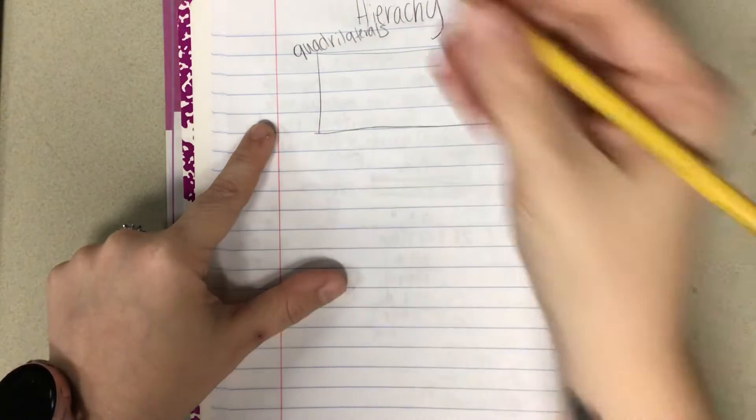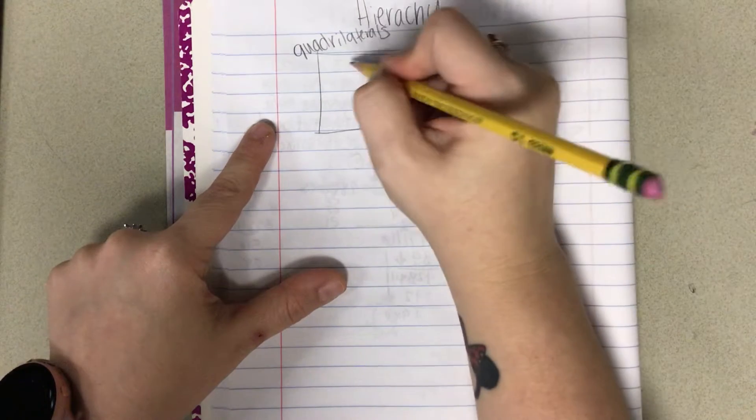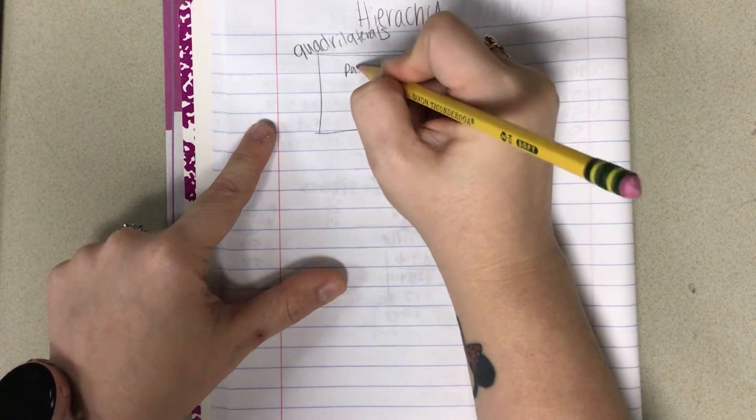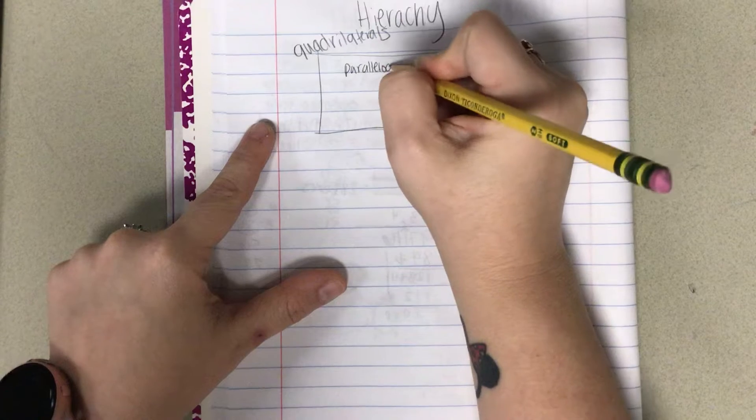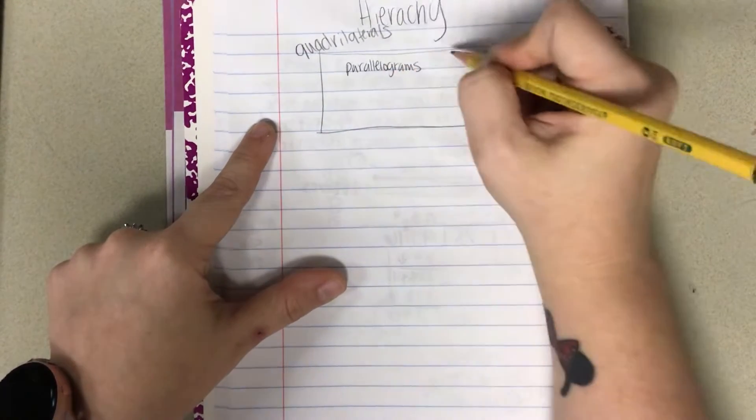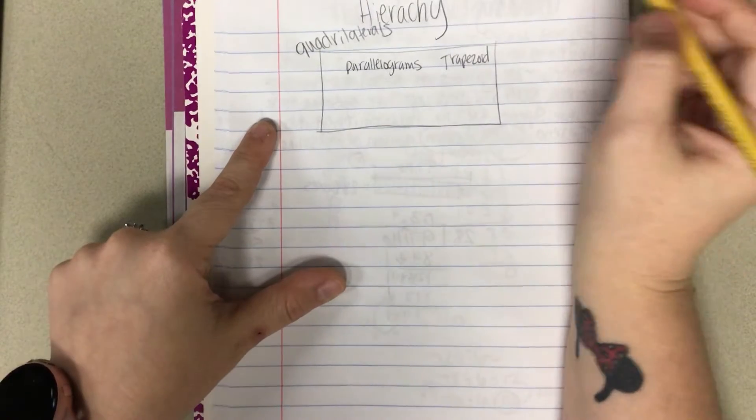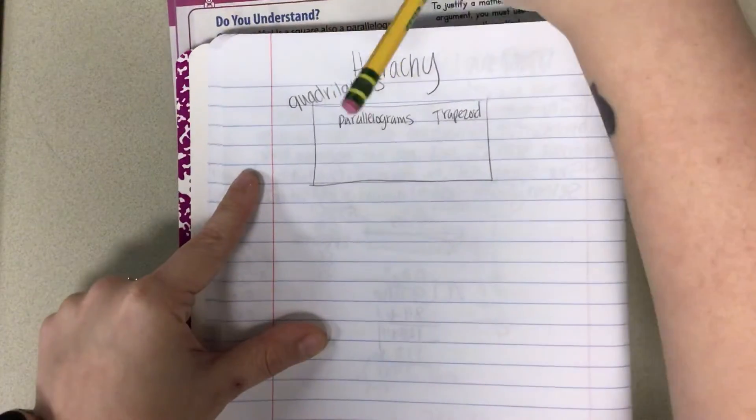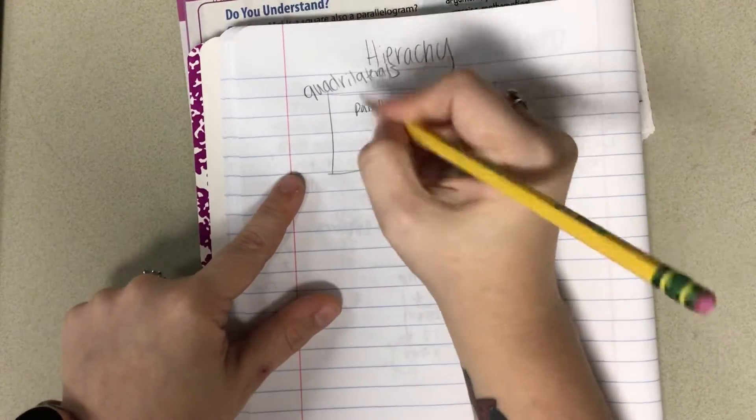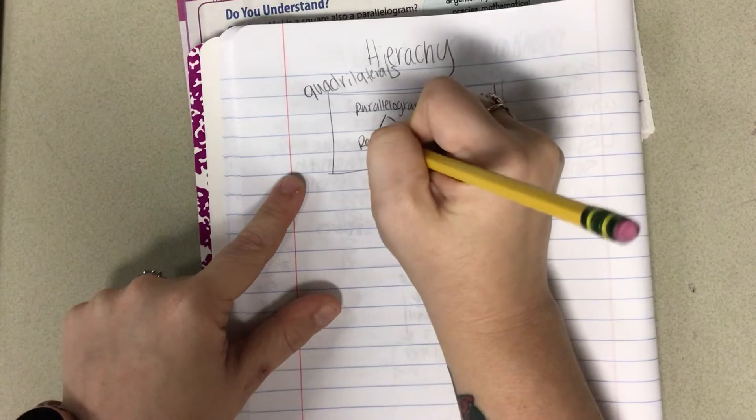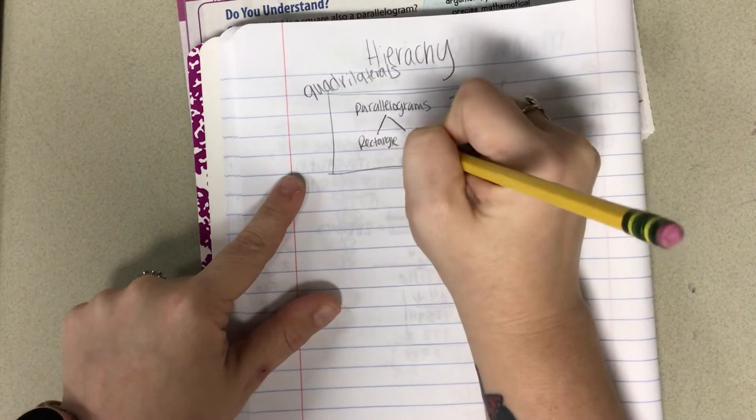So far we know that there's two main types. You have parallelograms, and we have trapezoids. Now, under your parallelograms, you'll see you had two things. You had a rectangle, and you had a rhombus.